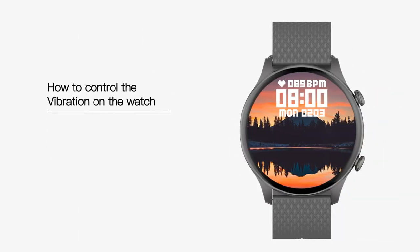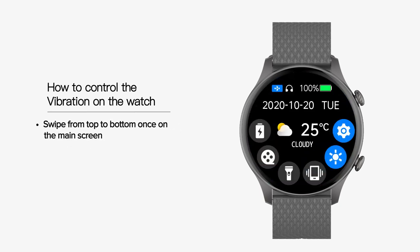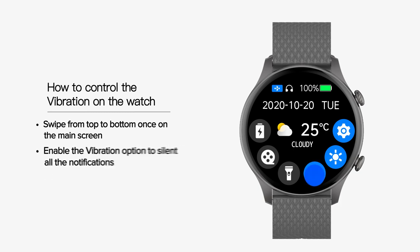How to control the vibration on the watch. Swipe from top to bottom once on the main screen. Enable the vibration option to silent all the notifications.